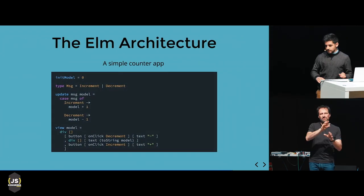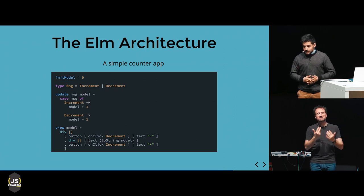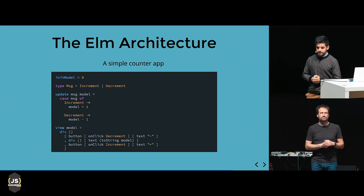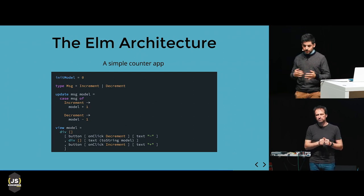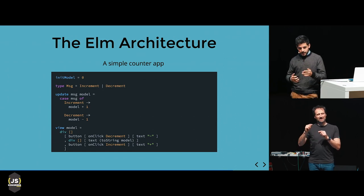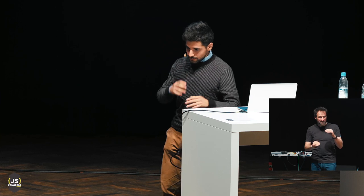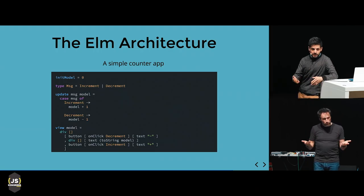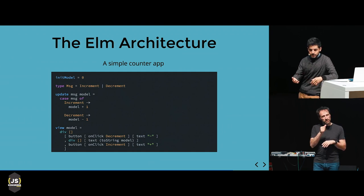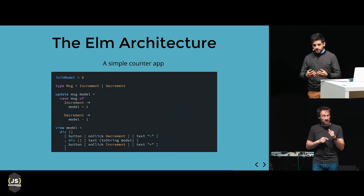Here's a quick demo of how you define these things in a simple counter application. We define an initial model which is just the integer zero. We define the types of messages we can trigger: increment and decrement. In the update function, we handle those cases — for increment, we return model plus one. And our view is just a div rendering three elements: a button with a minus text that reduces the counter, binding a click event to trigger the decrement message, and another button that increments it.